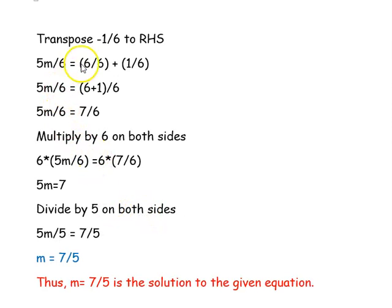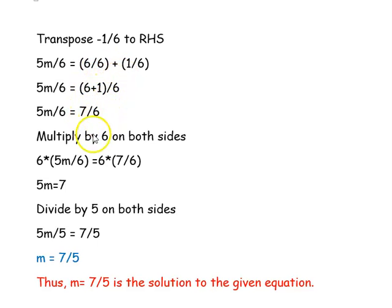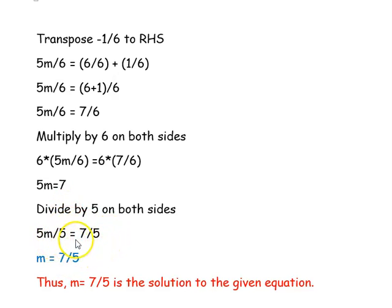Next we transpose minus 1 over 6 to the right-hand side, where it becomes plus 1 over 6. So 5m over 6 equals 6 over 6 plus 1 over 6. Since denominator 6 is common, 6 plus 1 equals 7, so 5m over 6 equals 7 over 6. Multiplying both sides by 6: 5m equals 7. Dividing both sides by 5: m equals 7 over 5. Thus m equal to 7/5 is the solution to the given equation.